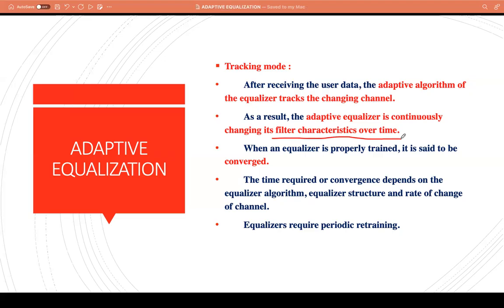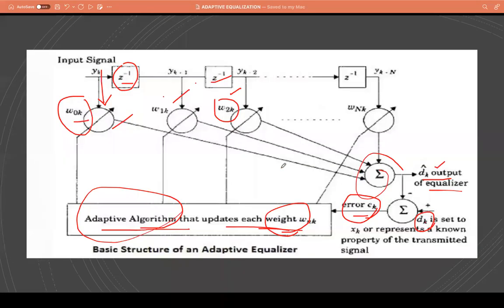It keeps changing the weights until the equalizer is properly trained, properly trained in the sense that the error is minimum. And at that particular point, the equalizer is said to be converged. So this is how the adaptive equalizer works.